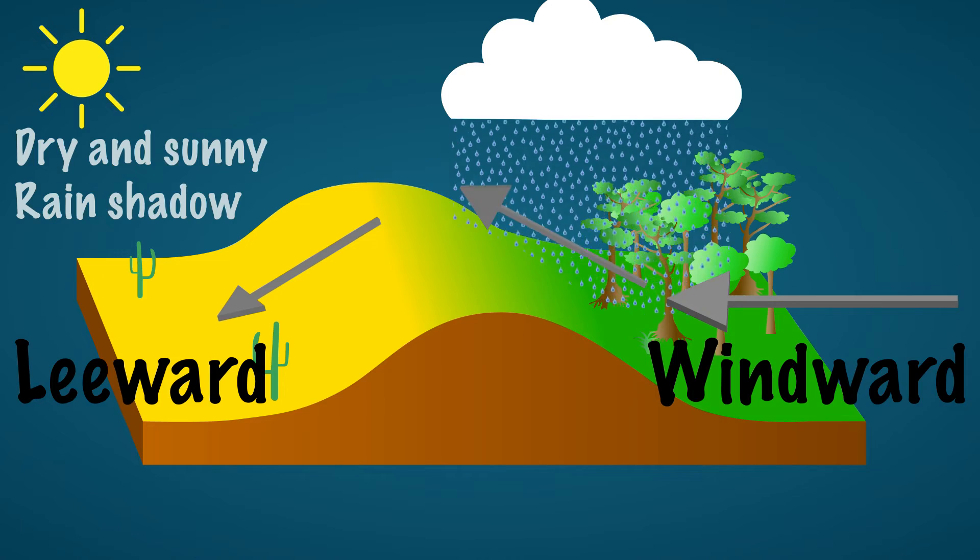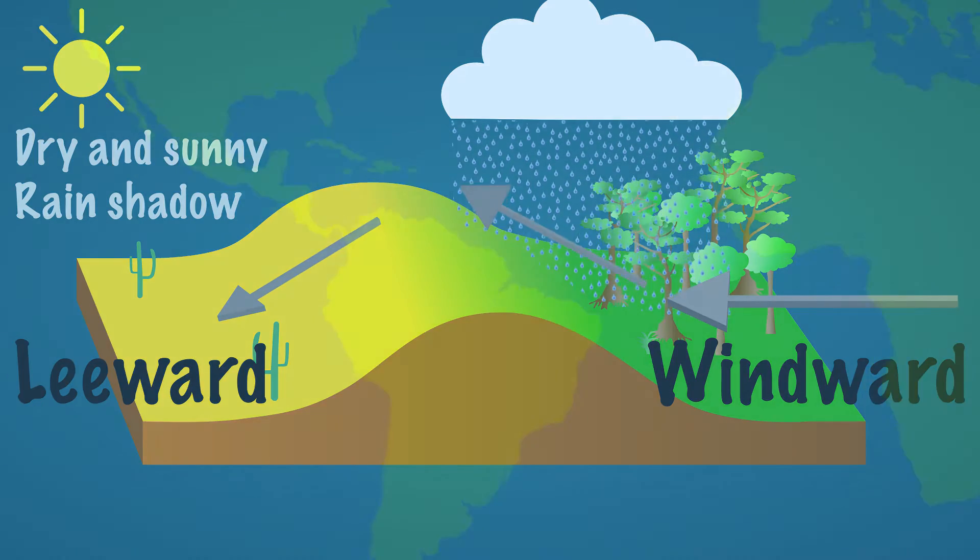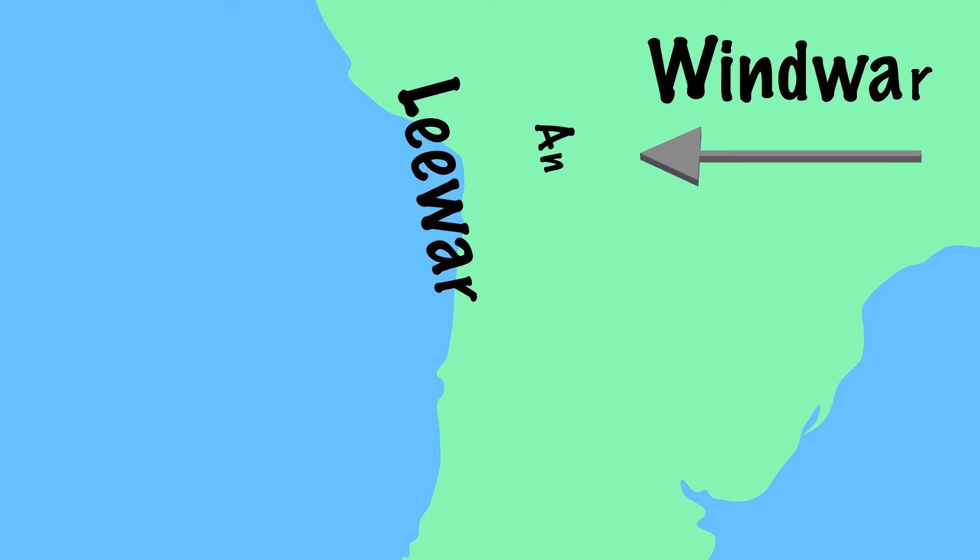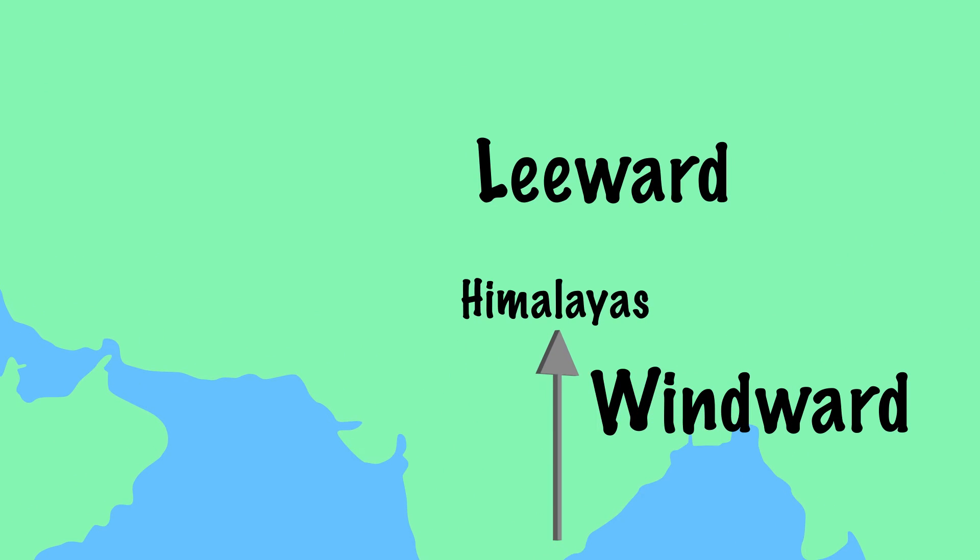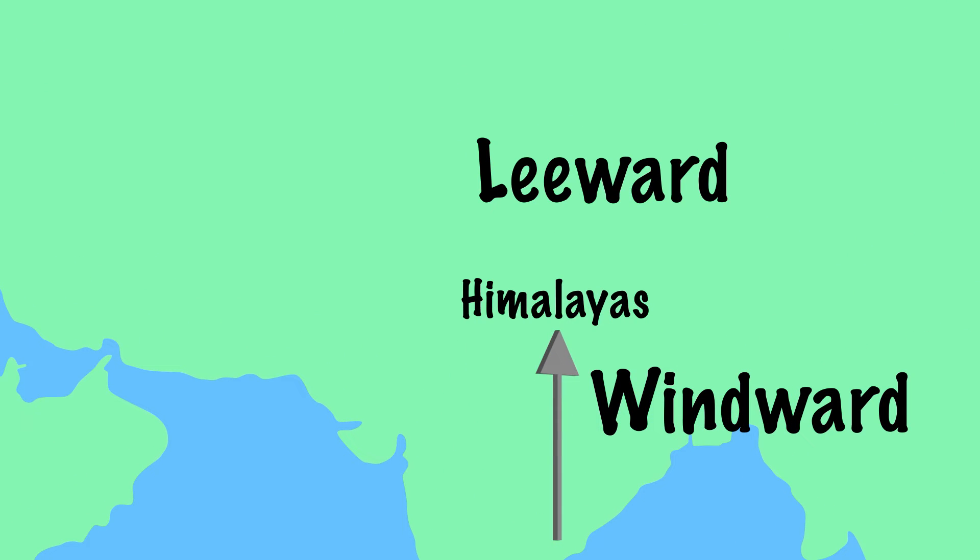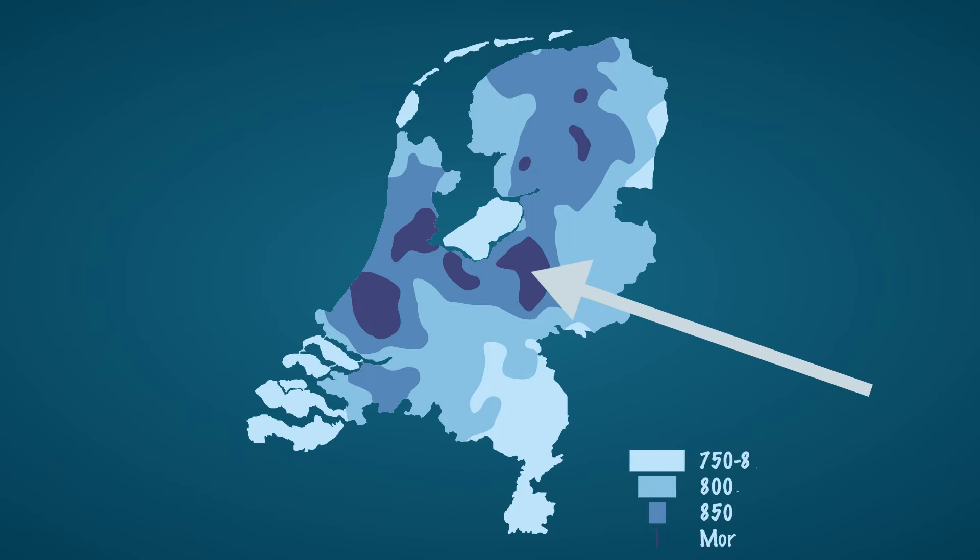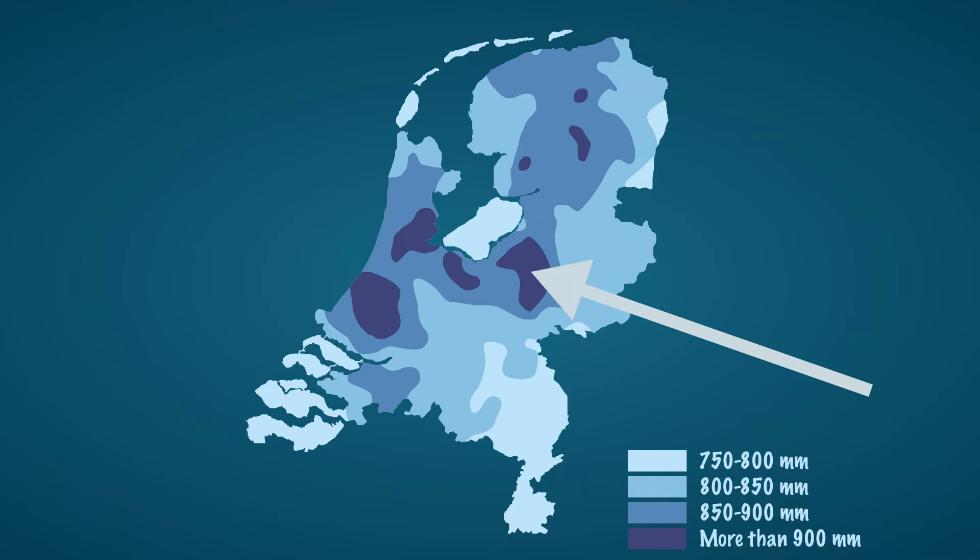On the lee side is often a desert area. Examples are the areas in the rain shadow of the Andes or the Himalayas. However you don't necessarily need mountains for this effect. The Veluwe is one of the wettest places in the Netherlands because it is several tens to a hundred meters higher so that clouds and eventually precipitation are created here as well.